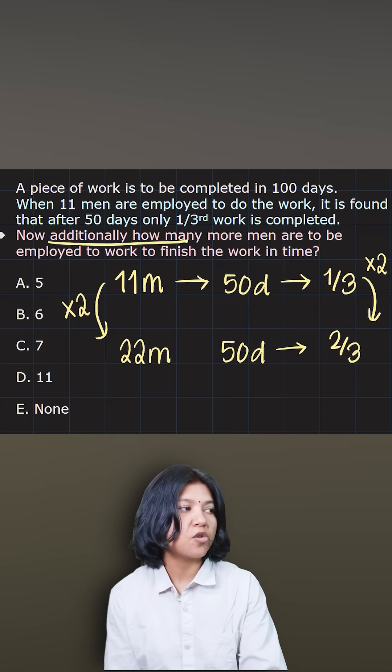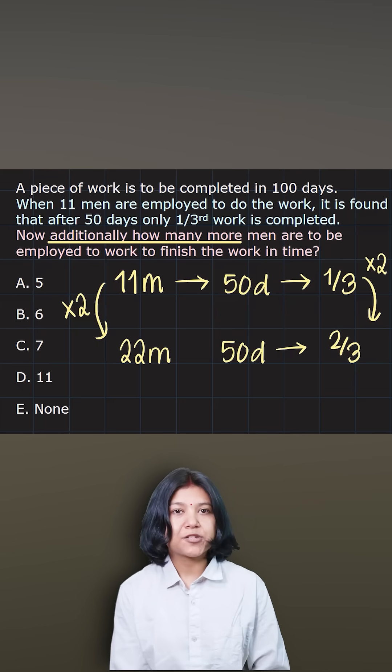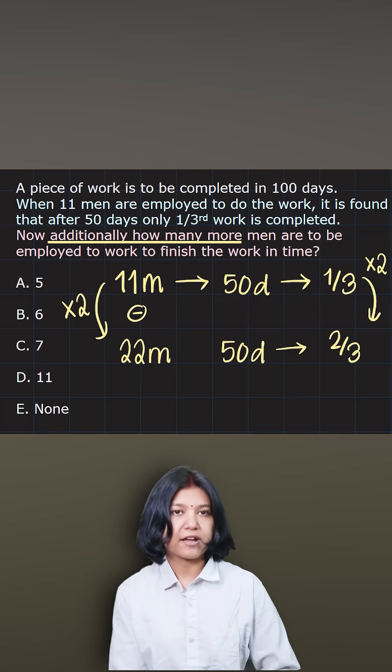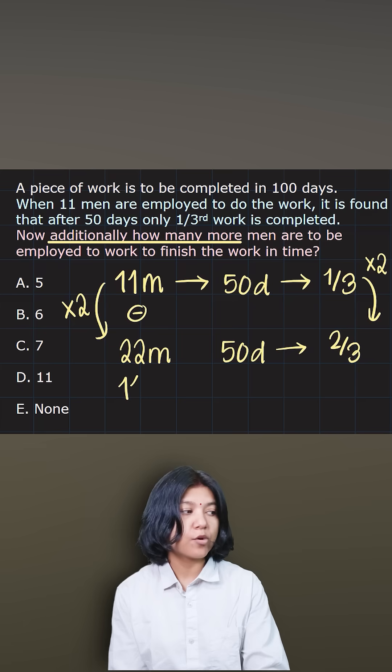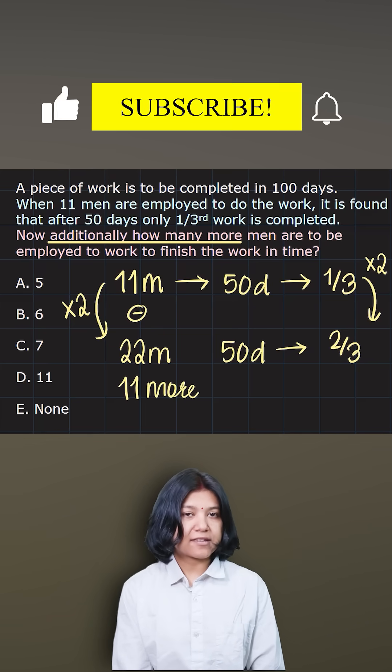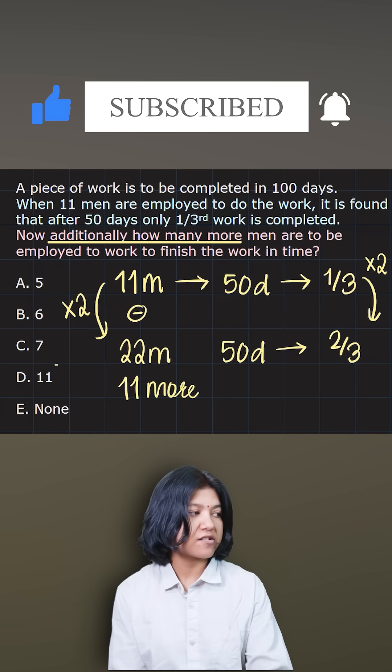The question is asking me additionally how many more. So that means I need to make sure that I'm subtracting the existing number of men I had initially. So I will just find the difference of the two values, which means I'll need 11 more men to make sure that I complete the work in the remaining same number of days. So answer is just D, 11.